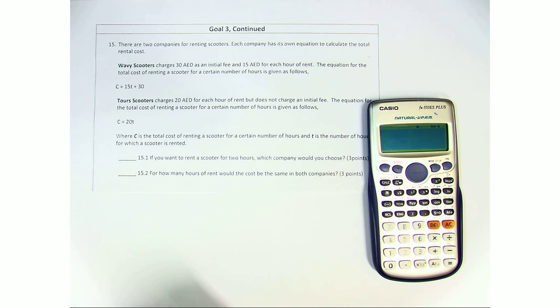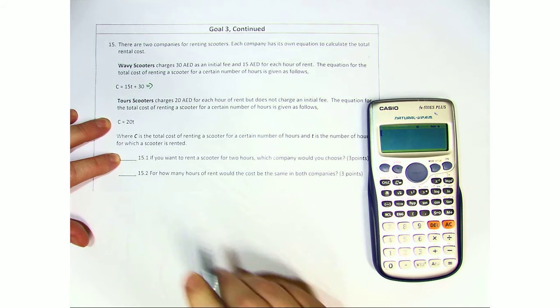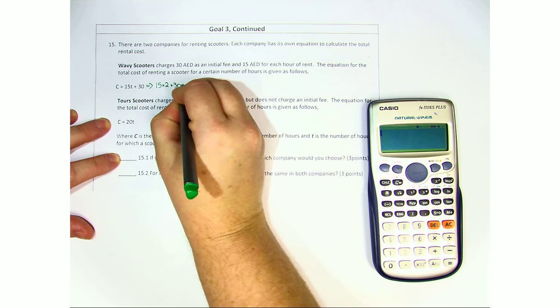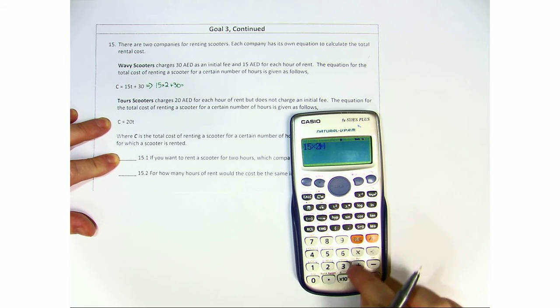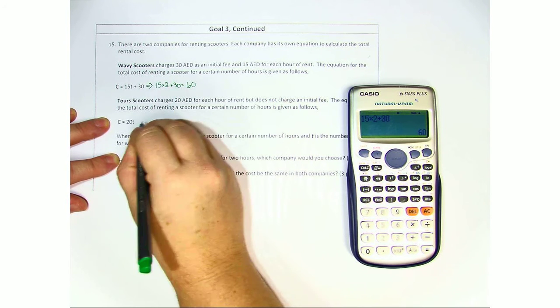If you want to rent a scooter for two hours, which company would you choose? In this case, we're going to put in two for each of these: 15 times 2 plus 30. Let's go ahead and do that in our calculator. 15 times 2 plus 30. And for Wavy, you would be charged 60 dirhams.